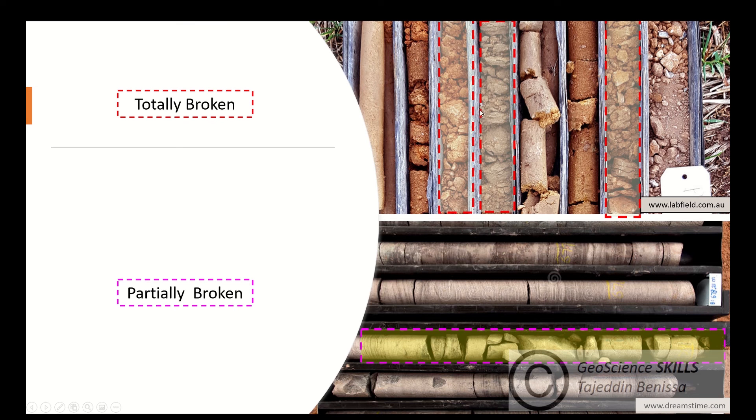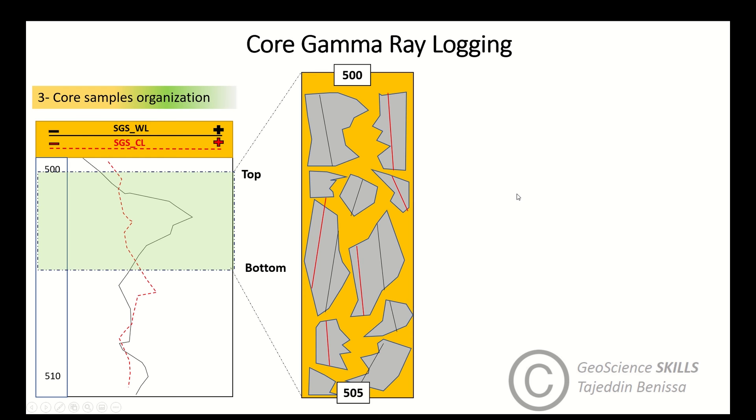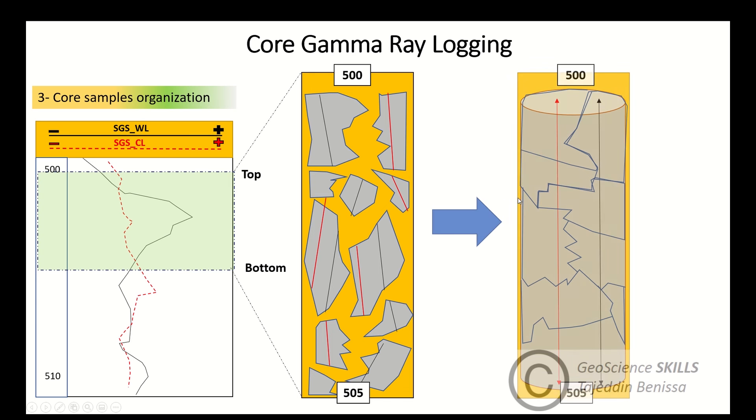In this case it's not possible of course to provide consistent information when logged to partially broken core, which is generally associated with core handling at well site or at the lab, or sometimes due to natural fracturing. However, the broken pieces must be refit together if possible before core gamma logging to restore core to its original status as we see here.